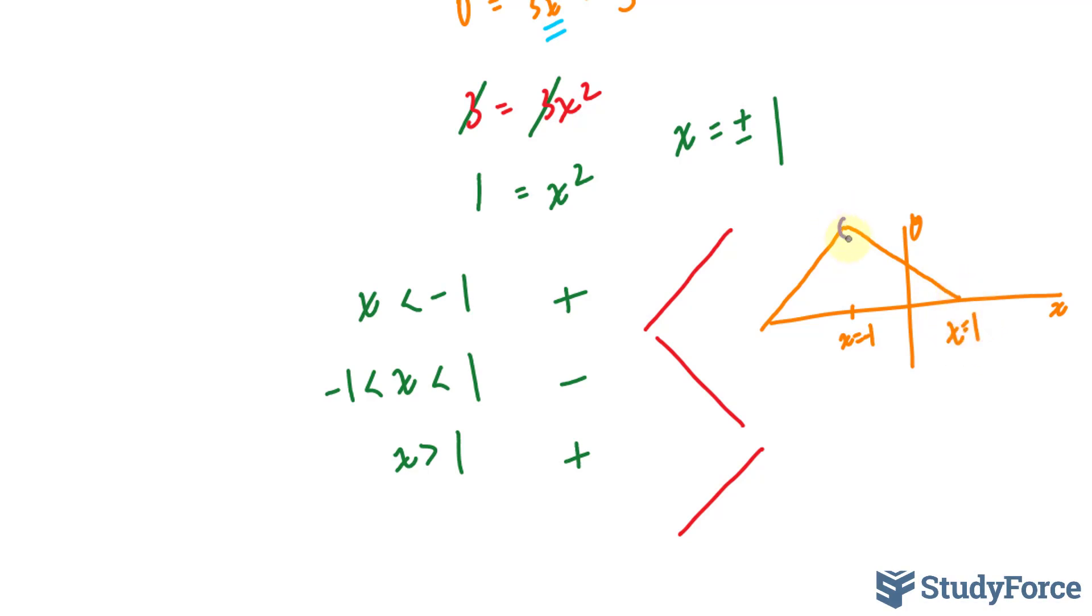So this is x is equal to positive 1. So it reached the maximum, and then at this point, it was its minimum point, and then it started to go back up again.